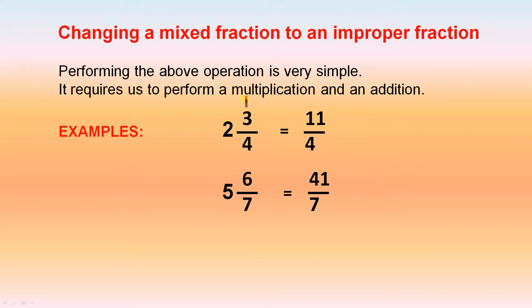Two and three quarters. To change that to an improper fraction, all you do, four times two is eight, plus three gives you eleven. So the eleven goes on top in the numerator, and the four becomes the denominator.